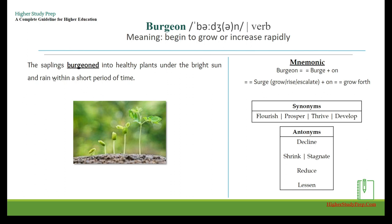For example, the saplings burgeoned into healthy plants under the bright sun and rain within a short period of time. The mnemonic: break it as 'burge + on,' which sounds like 'surge + on,' and surge means to grow, rise, or escalate — so burgeon means to grow forth. Synonyms: flourish, prosper, thrive, develop. Antonyms: decline, shrink, stagnate, reduce, lessen.